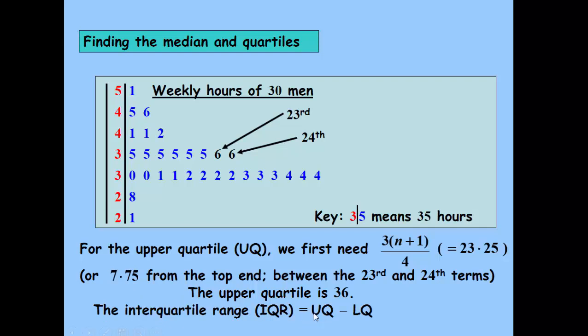The interquartile range is the upper quartile minus the lower quartile. So it's 4, because it's 36 for the upper quartile, 32 for the lower quartile.